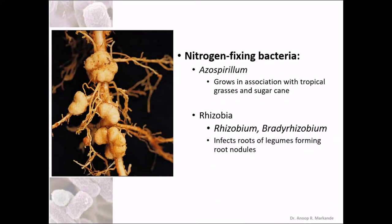Now we are coming to nitrogen-fixing bacteria, which include Azospirillum and Rhizobia. Azospirillum is known to be an associated bacteria — associated with grasses and sugarcane — where it is present on the root and fixes atmospheric nitrogen. Rhizobium and Bradyrhizobium are known to form nodules in the roots, especially of the legume plants.